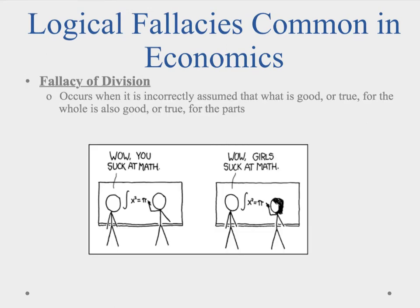The next fallacy is the fallacy of division, which occurs when it is incorrectly assumed that what is good or true for the whole is also good or true for the parts. An example is concluding that because free trade brings benefits to the economy as a whole, it is also beneficial for each segment of society. The fallacy of division occurs primarily in macroeconomics because it deals with the whole that is made up of many different parts.